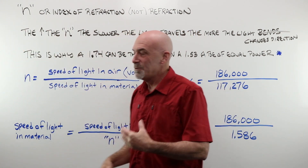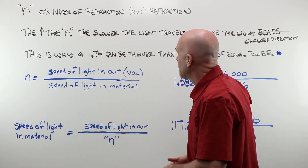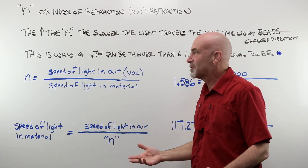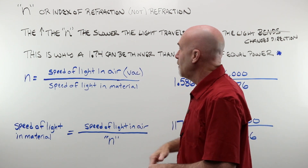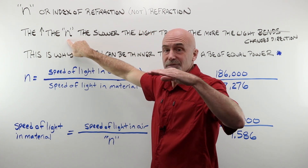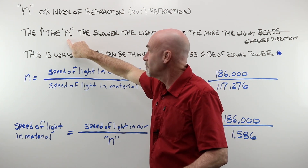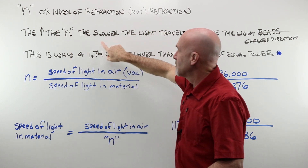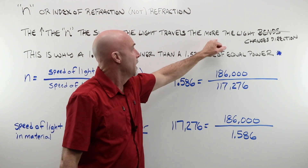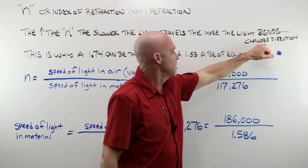N is the symbol we use most often in opticianry to indicate the index of refraction of a given material. Today we are talking about the index of refraction — we are not talking about refraction. The definition, if you will, is: the higher or greater the index of refraction — 1.50, 1.53, 1.586, 1.60, 1.67, 1.70, 1.74 — the greater the index of refraction, the slower the light travels through that given material, and the more the light changes direction. Bends is not the word you want to use.